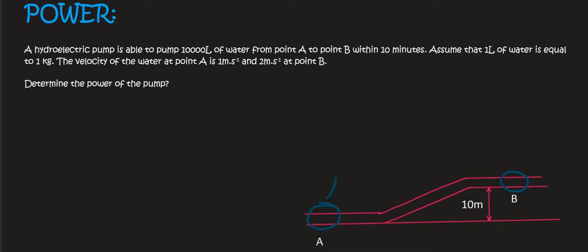So what we're going to do is we're going to take 10,000 liters of water and we're going to pump it from A to B in a time of 10 minutes, and the velocity at A is 1 meters per second and at B it's 2 meters per second.